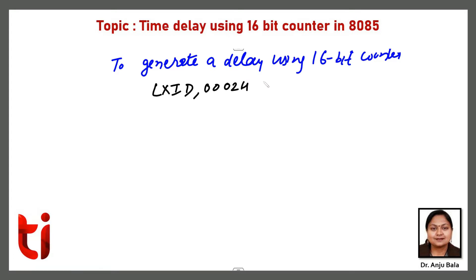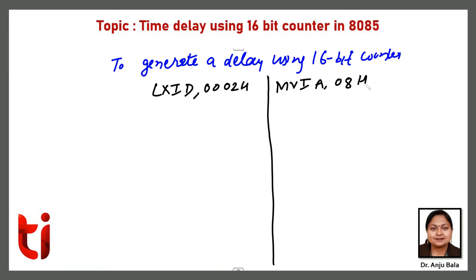If we want to set a counter of 8-bit, we have to use the MVI statement. For example, MVI moves data immediately to the accumulator. If I need to decrement this counter I have to use DCRA, and when I need to check whether this counter becomes zero I have to use the branching instruction JNZ — Jump If Not Zero — with a loop label.